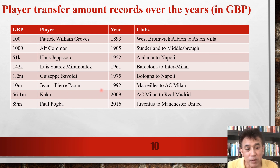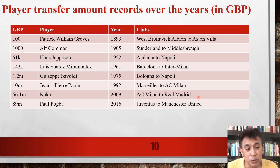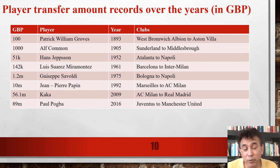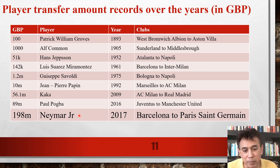Jean-Pierre Papin transferred from Marseille to AC Milan in 1992 for 10 million pounds. The 50 million pound barrier was broken in 2009 with Kaká transferring from AC Milan to Real Madrid for 56.1 million pounds. Paul Pogba then set a record of 89 million pounds transferring from Juventus to Manchester United in 2016. And the current record holder is Neymar, who in 2017 was transferred from Barcelona to Paris Saint-Germain for 198 million pounds.